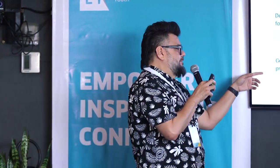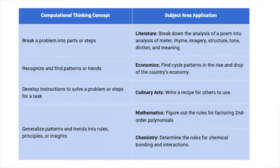We can also look at generalizing patterns and trends into rules, principles, or insights. In chemistry, we have to find the combination of elements needed to produce a chemical reaction. In mathematics, we figure out rules and factoring for second-order polynomials. So computational thinking applies anywhere.